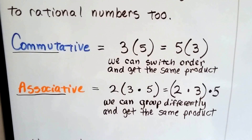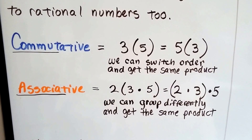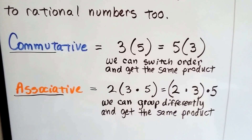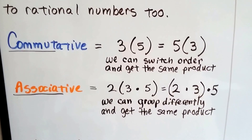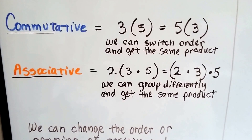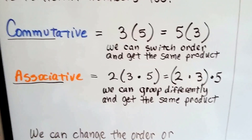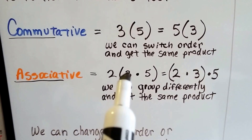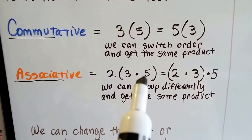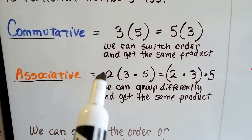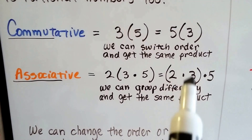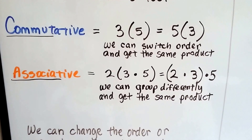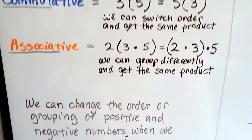With the commutative property, we can do 3 times 5 and it's going to equal 5 times 3. We can switch the order and get the same product. The associative property says we can group differently and get the same product. We can multiply these two together and then to the 2, or we can multiply the 2 and the 3 together and then the 5, and it's going to have the same product. And we can do this with rational numbers.